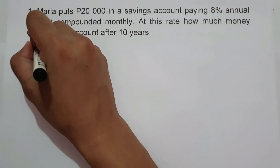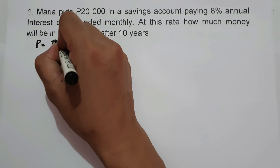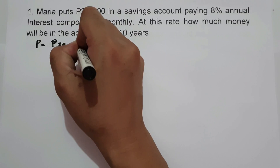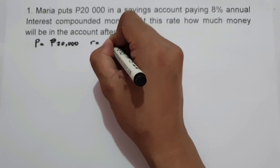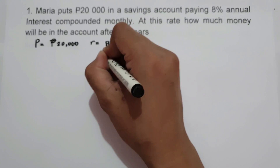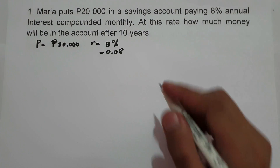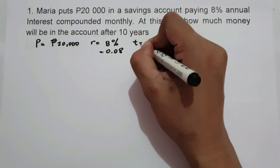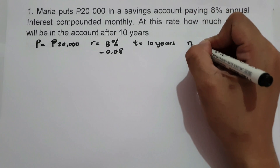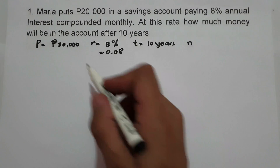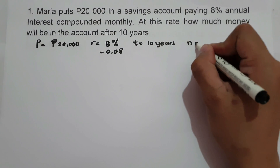The principal is 20,000 pesos. The rate is 8%, or 0.08. The time is 10 years. N is the number of periods — since it is compounded monthly, there are 12 months in a year, so N is 12.